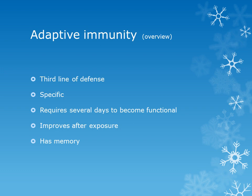Key differences between adaptive and innate immunity: adaptive is the third line of defense while innate is the second. Adaptive is highly specific; innate is non-specific. Adaptive requires a few days to become functional; innate is immediately active. Adaptive improves after repeated exposure; innate does not. Adaptive has memory through memory T cells and memory B cells; innate has no memory cells.